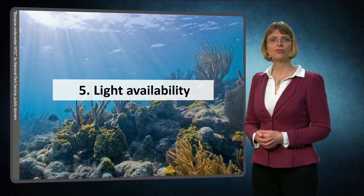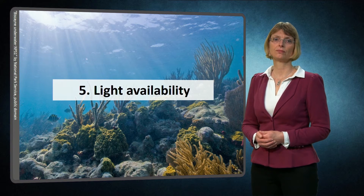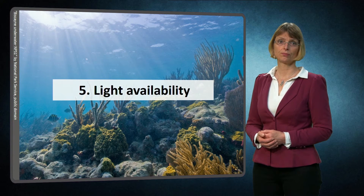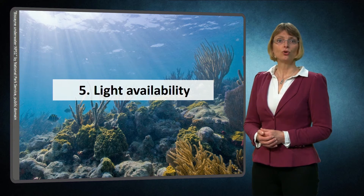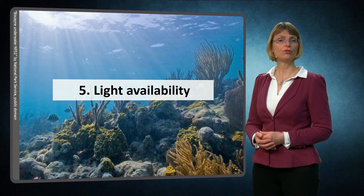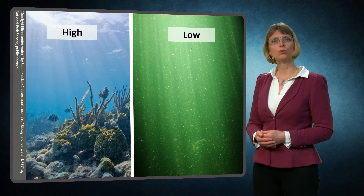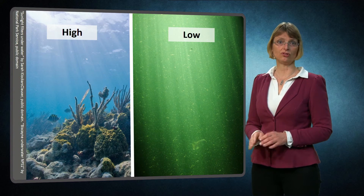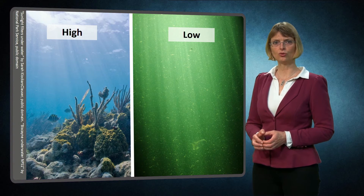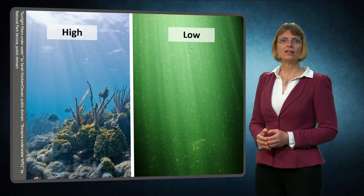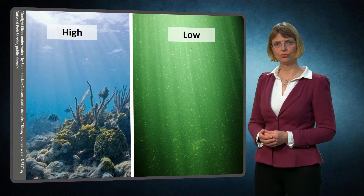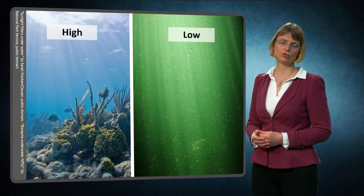The fifth important abiotic factor is light availability. This factor is a strong determinant of the formation of ecosystems, particularly in water. Corals and submerged plants, such as seagrasses, depend on light to perform photosynthesis. Light availability in water is correlated with water depth and turbidity — the amount of light absorbing materials in the water. In clear and shallow waters, light availability is high, promoting the formation of coral reefs, seagrass beds and other types of submerged vegetation.